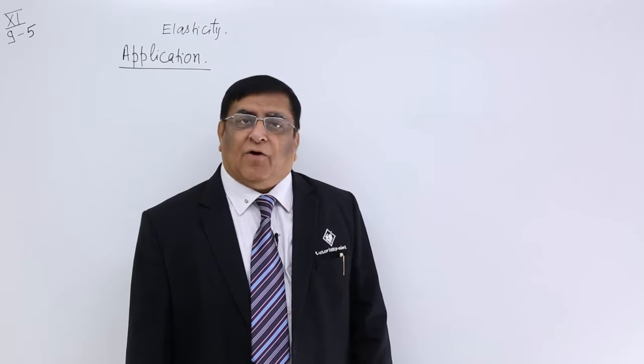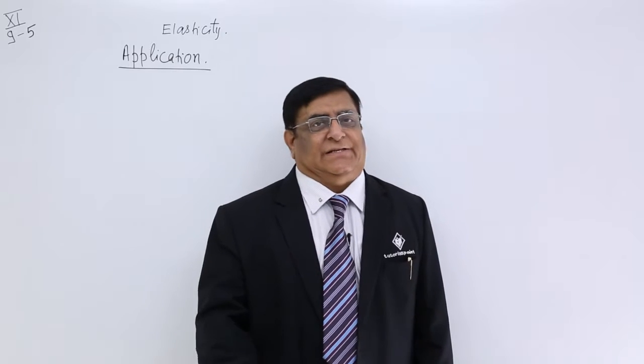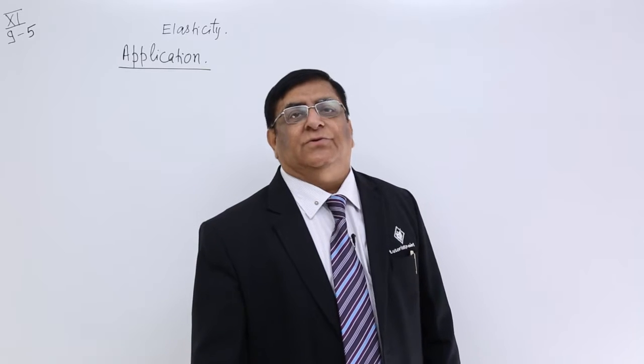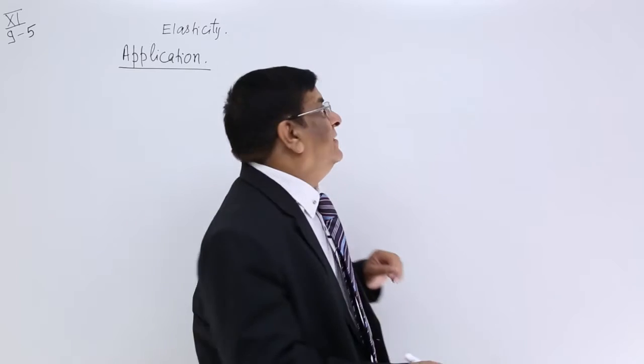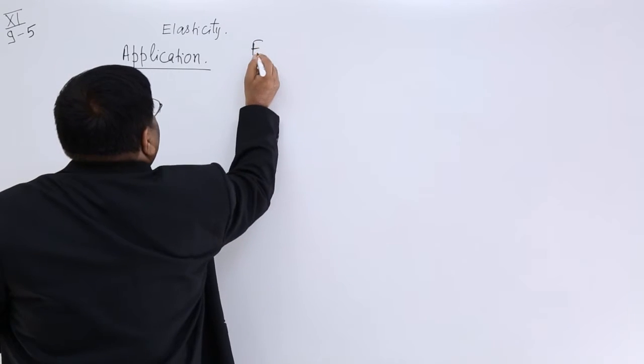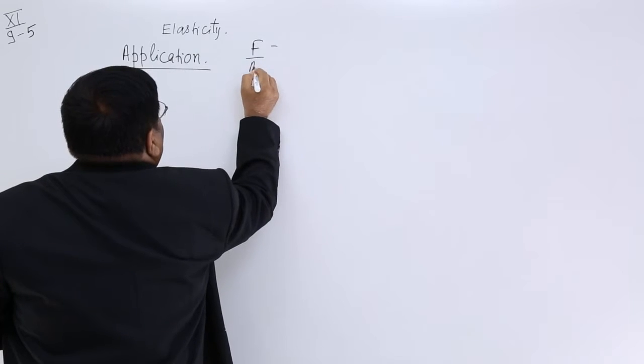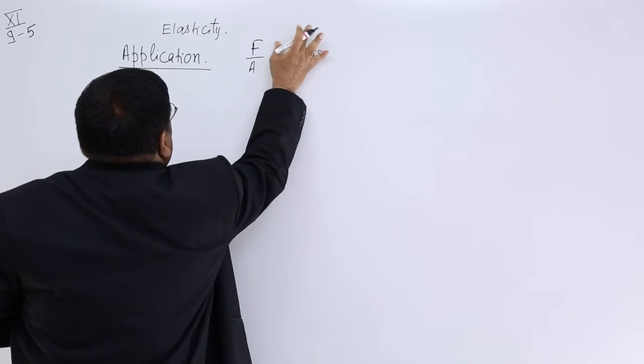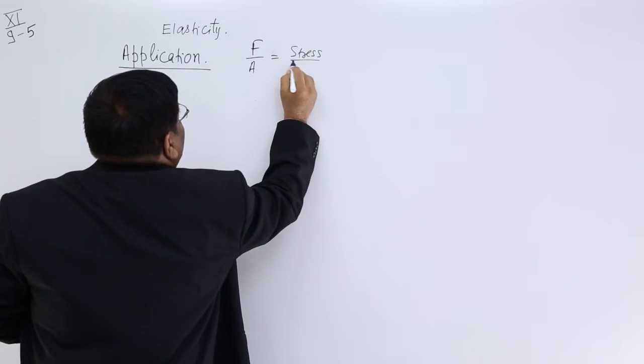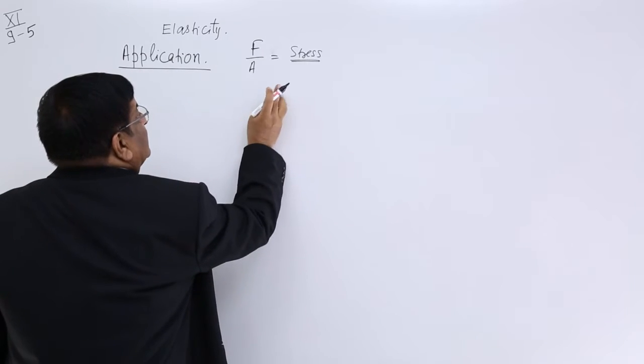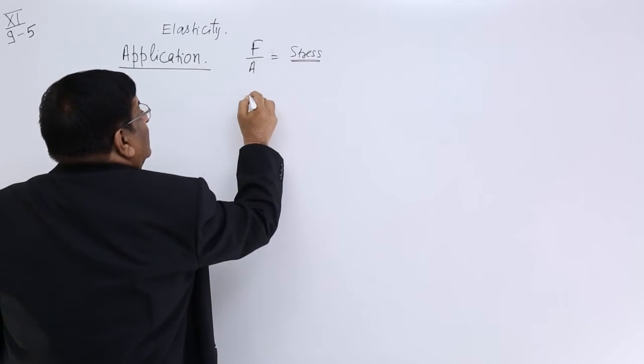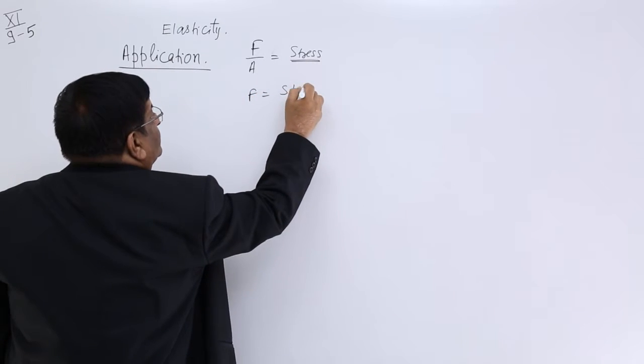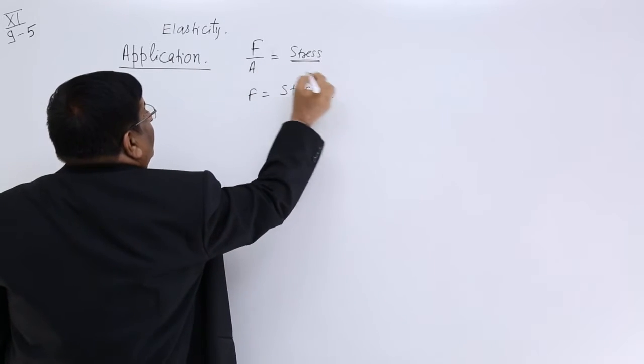But this limit we can apply only if we have knowledge of elasticity. So the load should be given according to yield limit. Then stress and the load, they have a relation. What is that relation? We know that force, that is load upon area, is stress. So from the chart, if we see the stress, that is modulus, then force is equal to what? Stress multiplied by area.